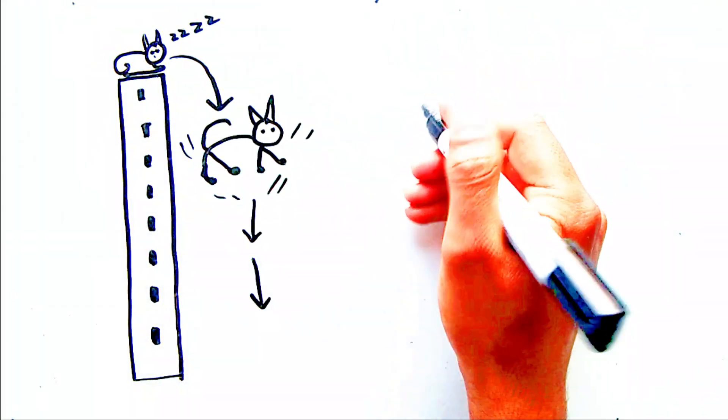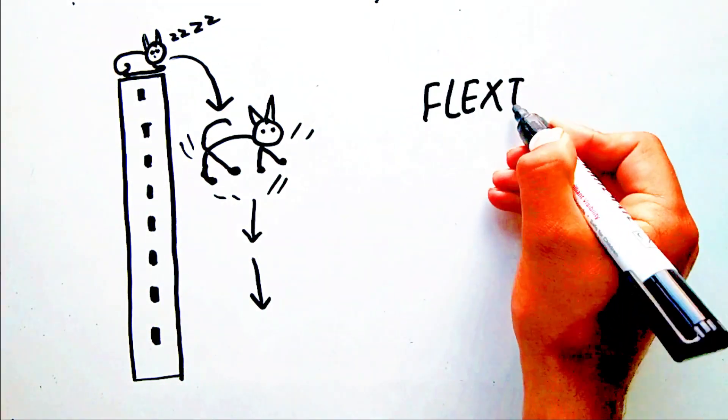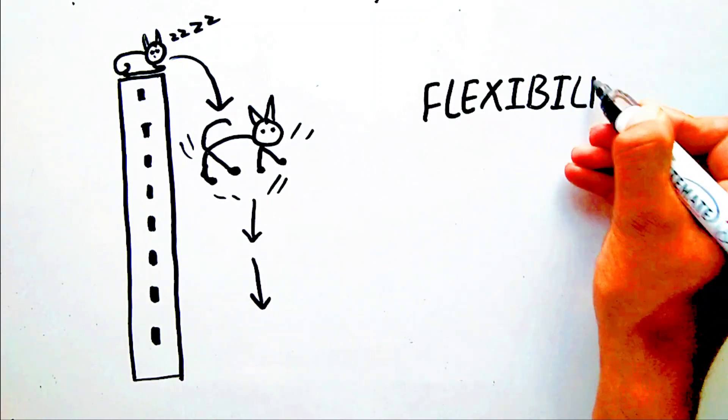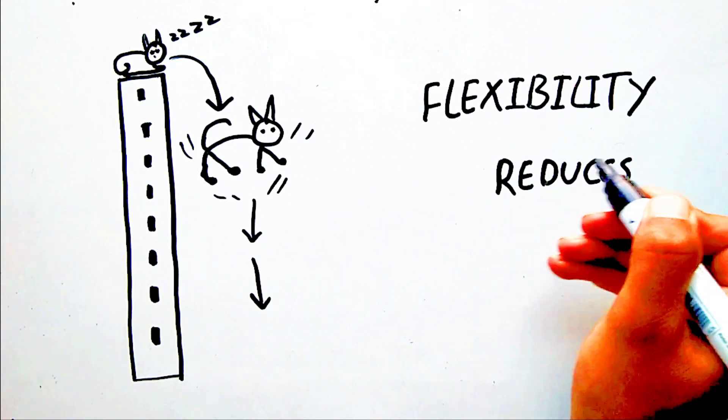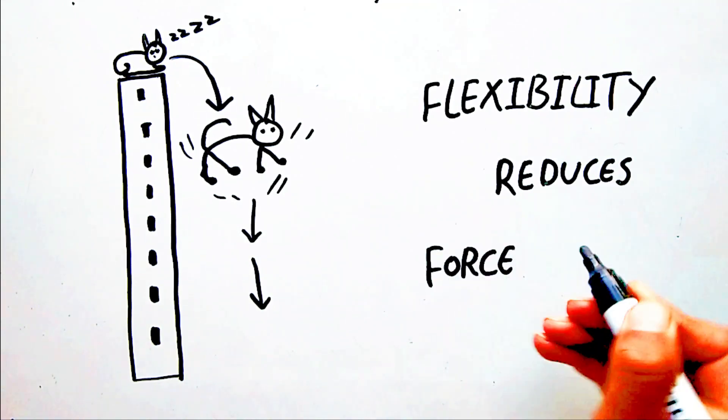The cat then uses the flexibility of its legs to absorb the shock of the landing. The flexibility lengthens the time of the landing and thereby reduces the force on the cat.